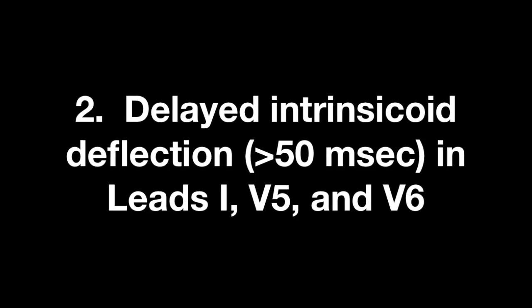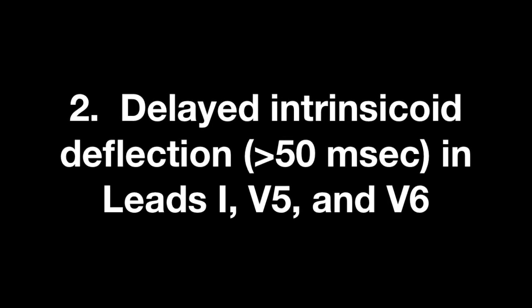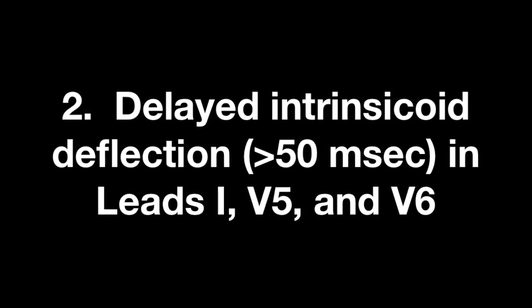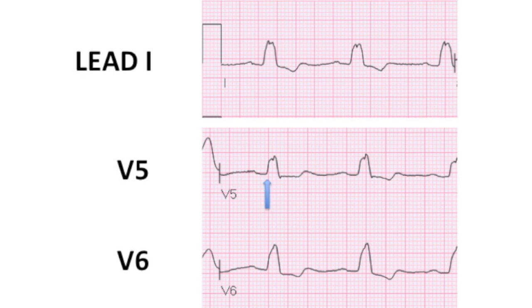The second criteria is a delayed intrinsicoid deflection of greater than 50 milliseconds in leads I, V5, and V6. Intrinsicoid deflection is simply the time from the onset of the QRS complex to the peak of the R wave, shown here in lead V5, and it needs to be greater than 50 milliseconds.